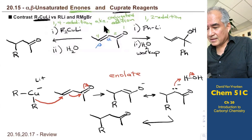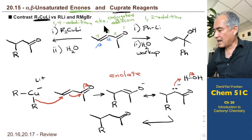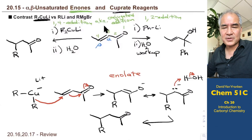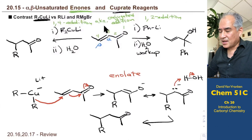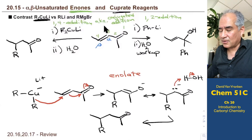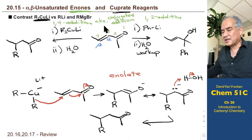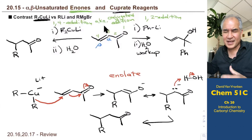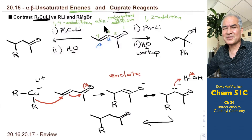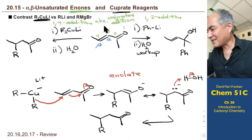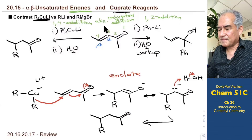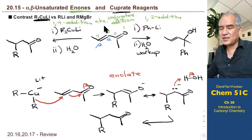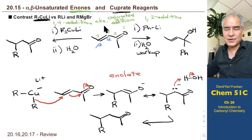We won't discuss cuprate reagents in the next chapter or the chapter after that, so you'll tend to forget about them. In the next two chapters we'll talk about addition to alpha-beta unsaturated enones and conjugate addition using different reagents from cuprates, and I'll jog your memory then. This conjugate addition is not as common as alkyllithium or Grignard additions to carbonyls, but you need it to frame your understanding for a few chapters from now.